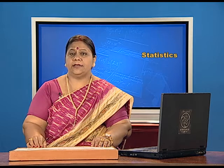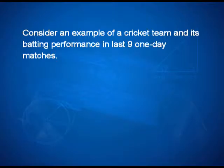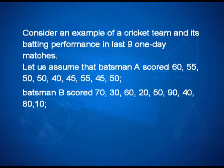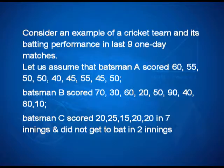Consider an example of a cricket team and its batting performance in the last 9 one-day matches. Batsman A scored 60, 55, 50, 50, 40, 45, 55, 45, and 50 runs. Batsman B scored 70, 30, 60, 20, 50, 90, 40, 80, and 10 runs. Batsman C scored 20, 25, 15, 20, 20 in 7 innings and did not get to bat in 2 innings.